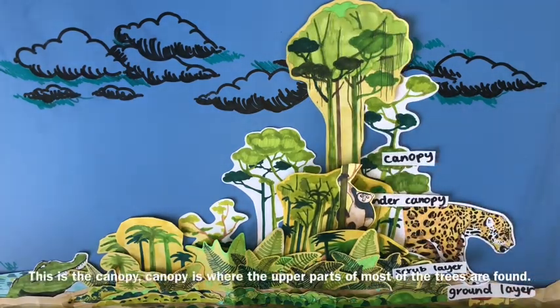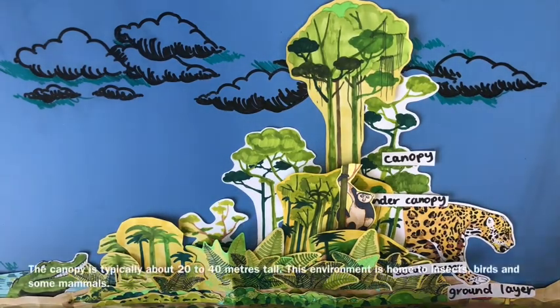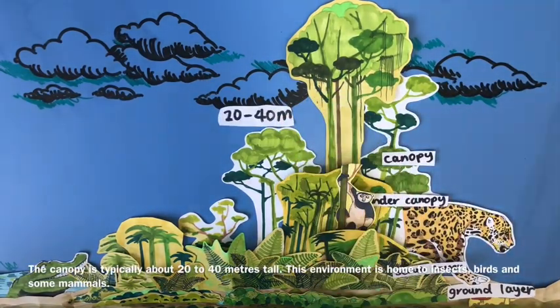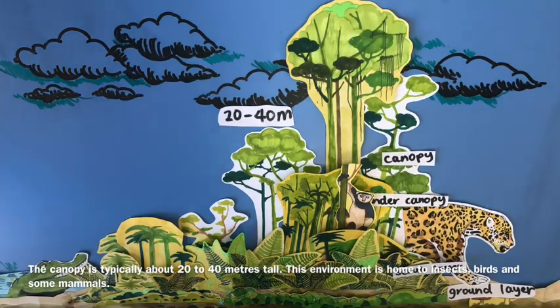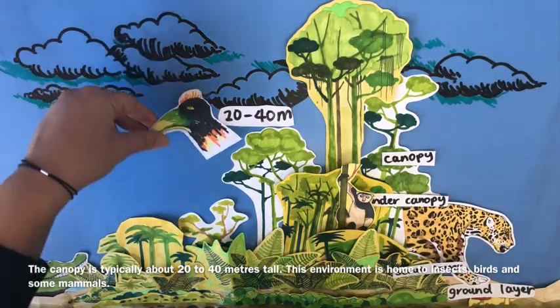This is the canopy. The canopy is where the upper part of most trees are found. The canopy is typically about 20 to 40 meters tall. This environment is home to insects, birds, and some mammals.